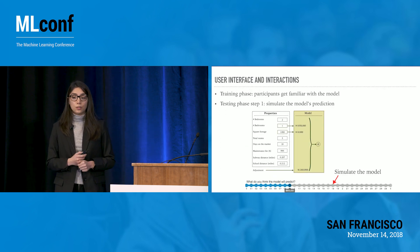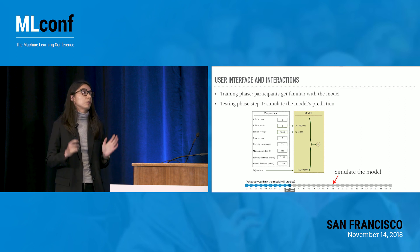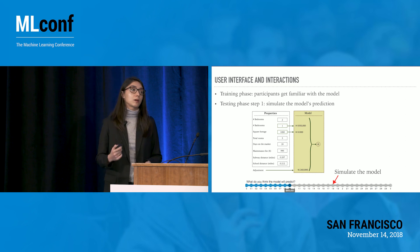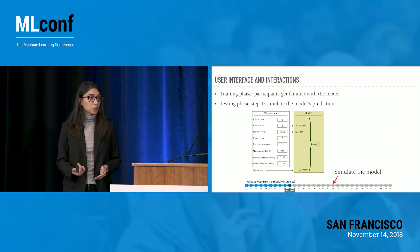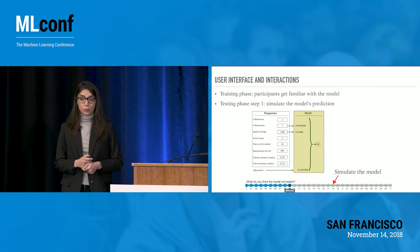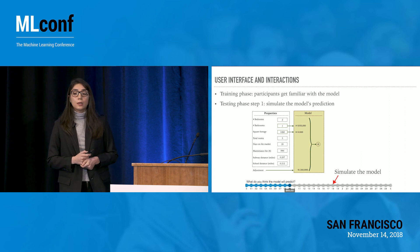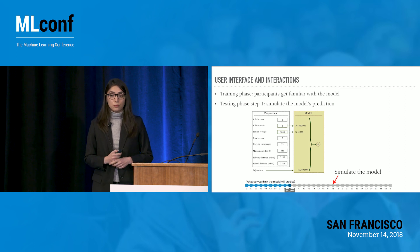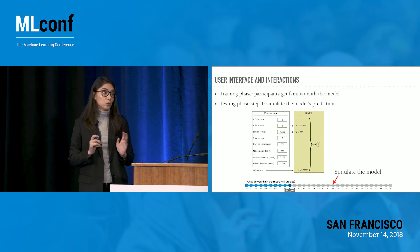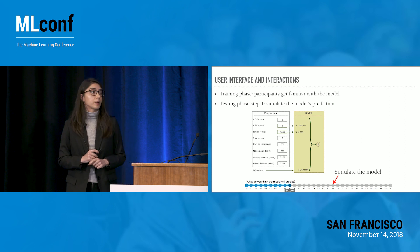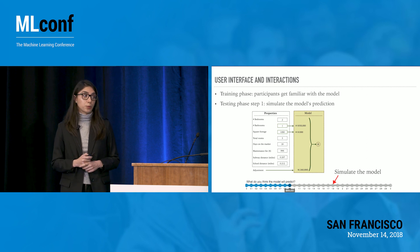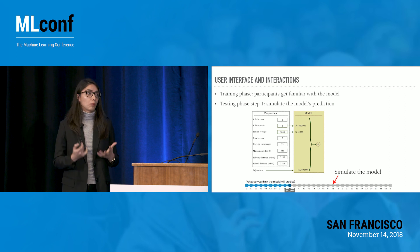The user interaction worked as follows: users were first instructed on the task, then moved to a training phase where they saw examples of apartments along with the model's prediction and the actual prices, getting familiar with how the model worked. When they completed that, they moved to the testing phase, where they first had to simulate the model — telling us what they thought the model would predict — to assess whether they actually understood how the model was working.